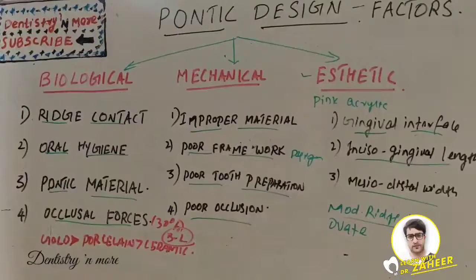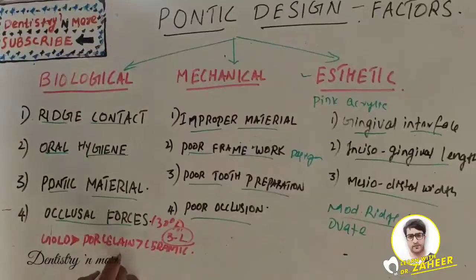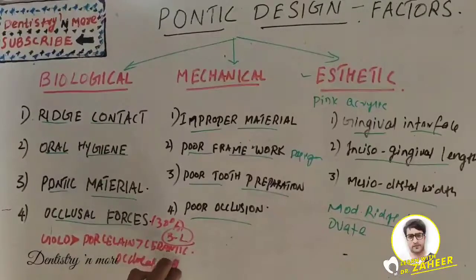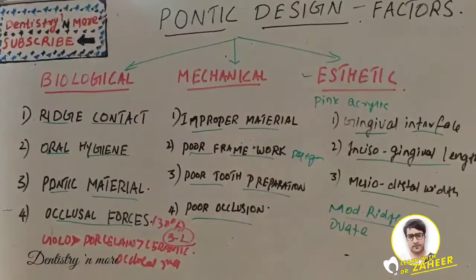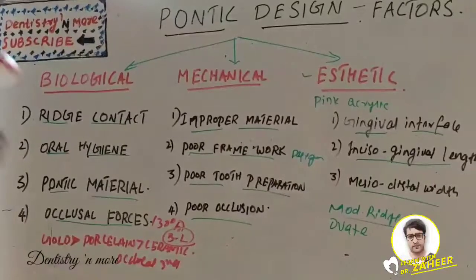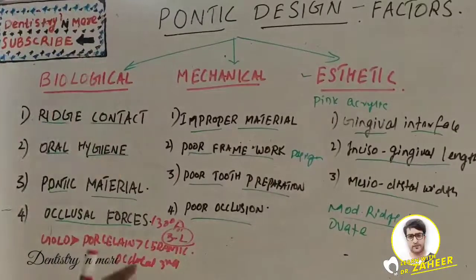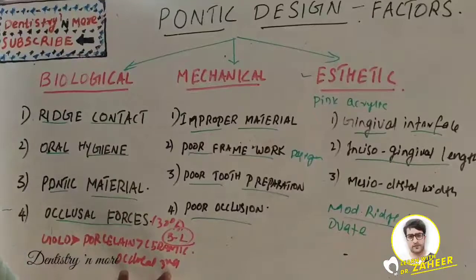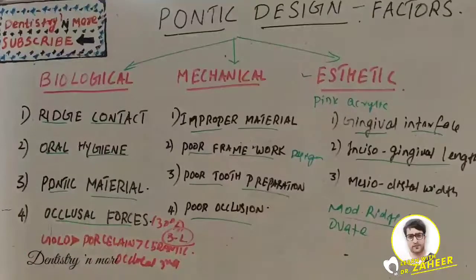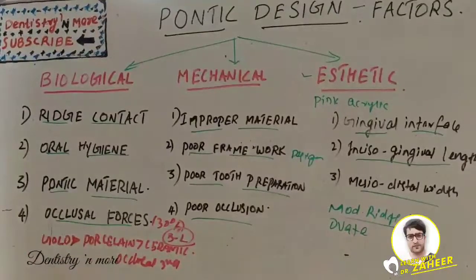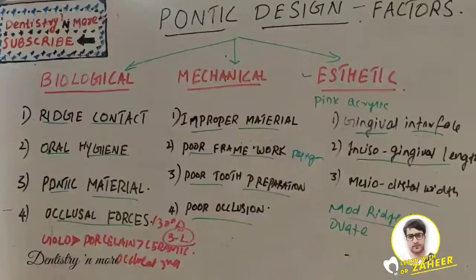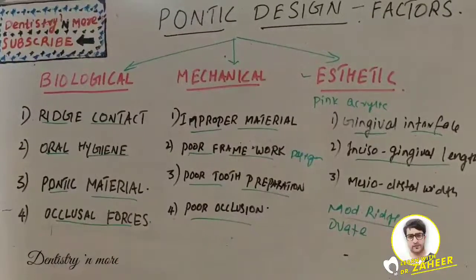Normal pontic width, at least at the occlusal third, is recommended. When the ridges have collapsed buccolingually, maintaining normal pontic width may not be possible, so always try to keep the normal pontic width at least at the occlusal third. That covers all the biological factors.